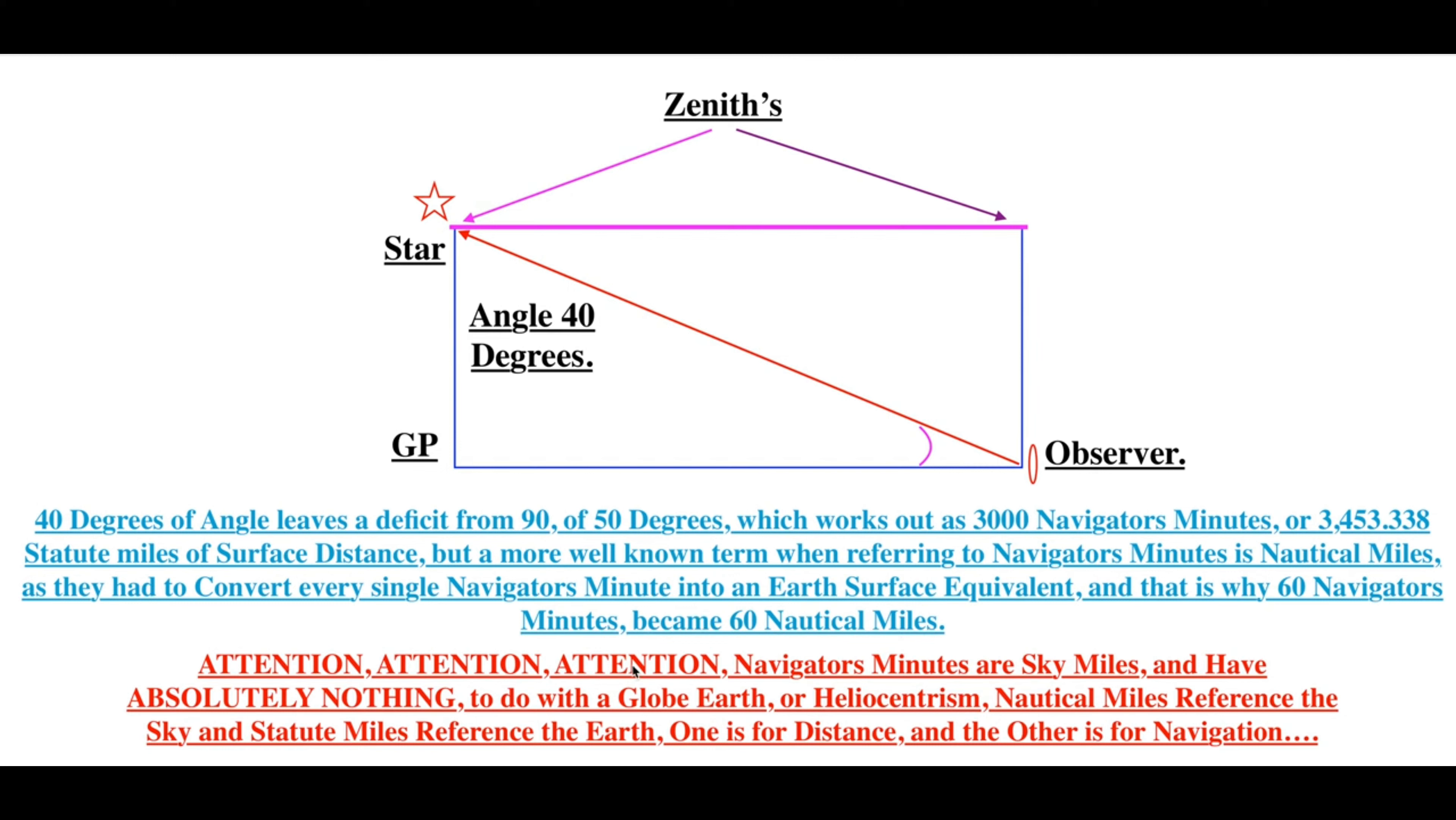Attention, attention, attention. This is the important part. Navigator's minutes are sky miles and have absolutely nothing to do with a globe earth or heliocentrism. Nautical miles reference the sky and statute miles reference the earth.